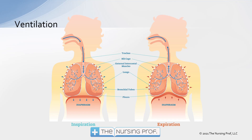On expiration, it's primarily a passive type of process. The diaphragm reverts back to its normal cone position. The chest wall is retracting by elastic recoil back to its normal state, and the lungs get smaller, air gets pushed out. So it's primarily a passive type of process that occurs with expiration.